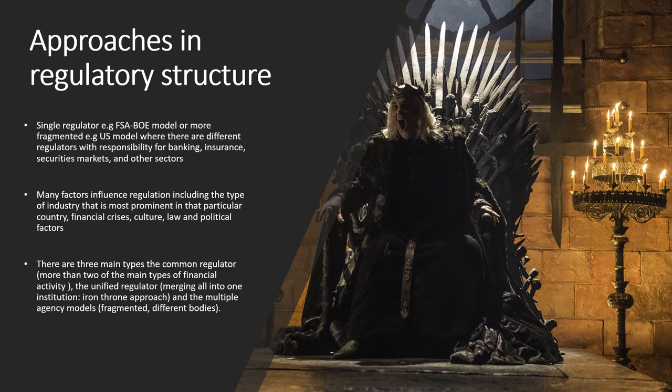There are two main overriding approaches for regulatory structure. There's a single regulator, like the Financial Services Bank of England model, or there's a more fragmented model, which is the US model, where there are different regulators with responsibility for banking, insurance, security markets, etc. Many factors influence the type of structure that is most prominent in a particular country.